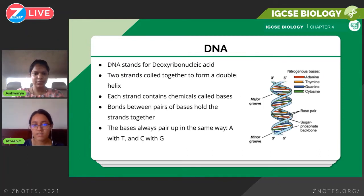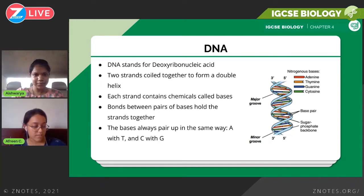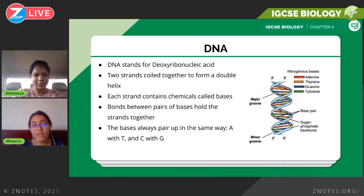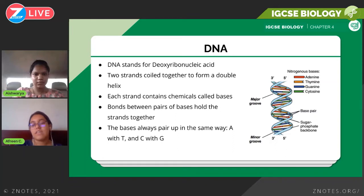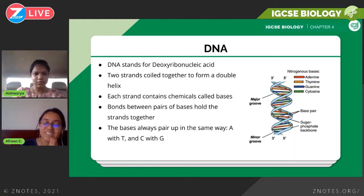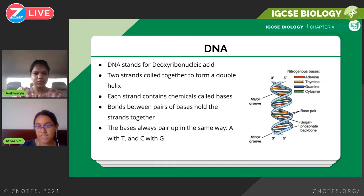Now we're looking at DNA — this is the extended part of the syllabus. DNA stands for deoxyribonucleic acid. DNA is basically two strands coiled together to form a double helix, as you can see in the diagram. Each strand contains chemicals called bases — these are nitrogenous bases: adenine, thymine, guanine, and cytosine.